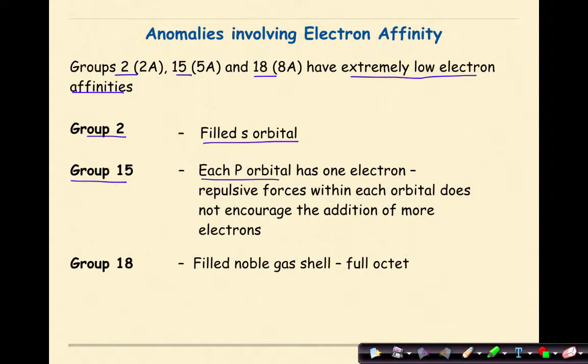In group 15, each p orbital has one electron. Repulsive forces within each orbital do not encourage the addition of more electrons.